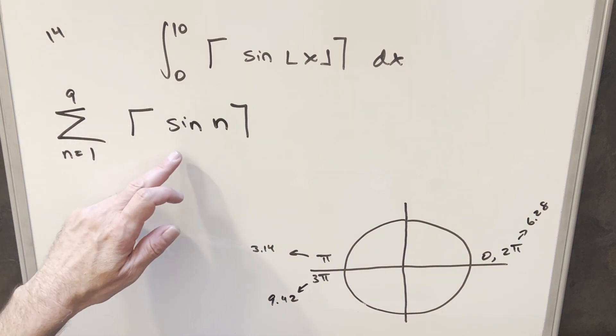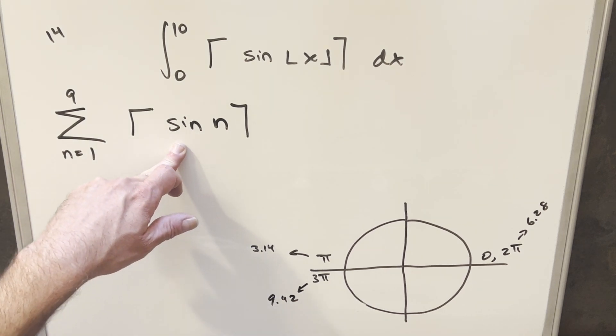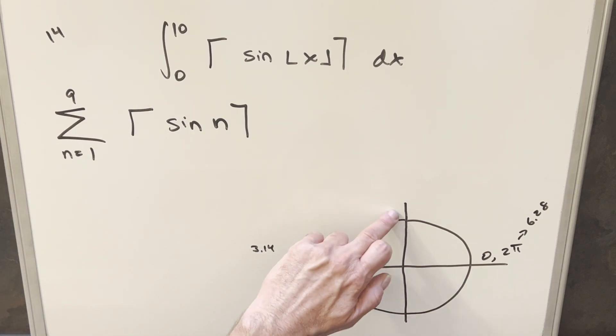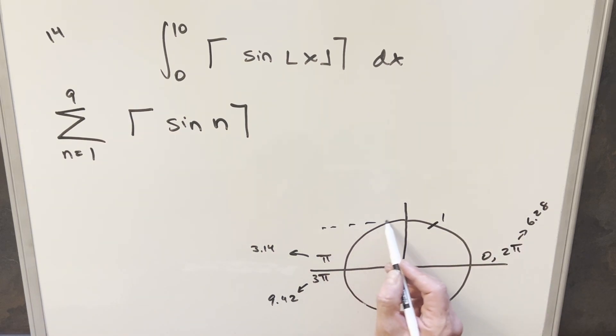Now sometimes when you have sine or cosine inside the floor or ceiling, they'll put a pi on it to simplify it. We don't have that here. This is just going to be evaluating sine of 1. Now pi over 2 is 1.57. We don't have to be very precise, but sine of 1 is going to be somewhere in this region. We know at sine pi over 2, this value is going to be 1.